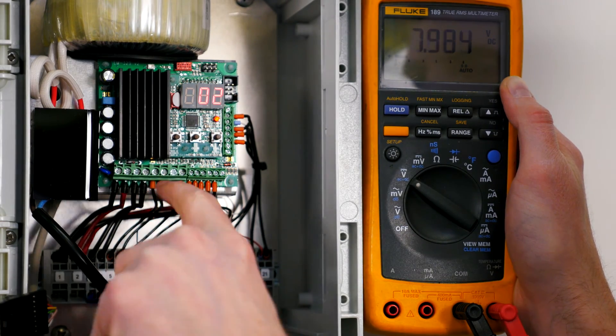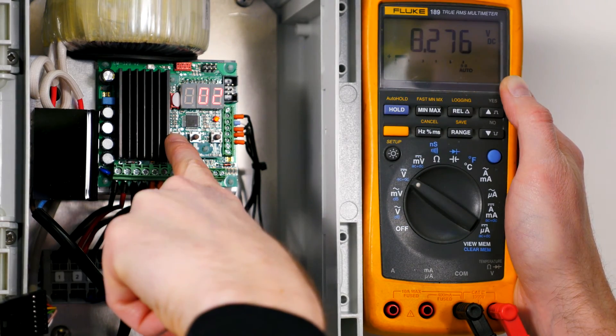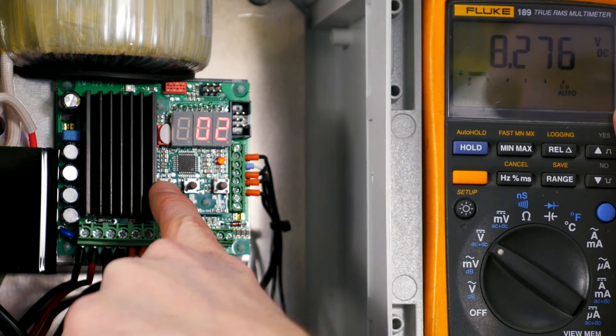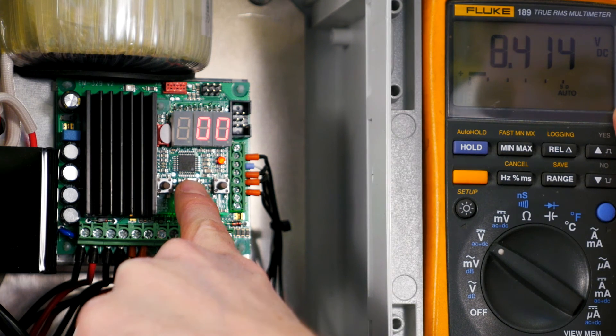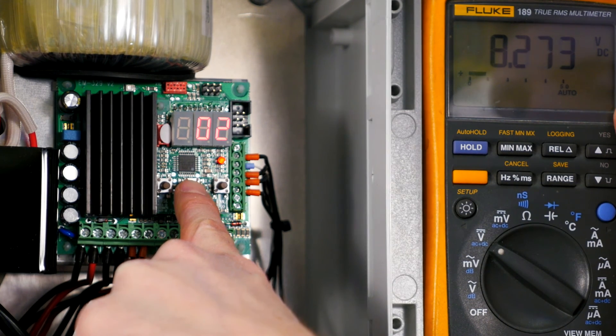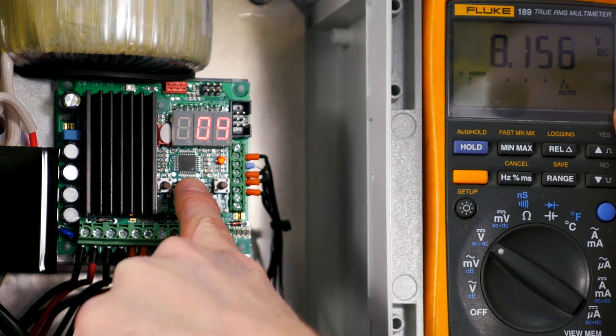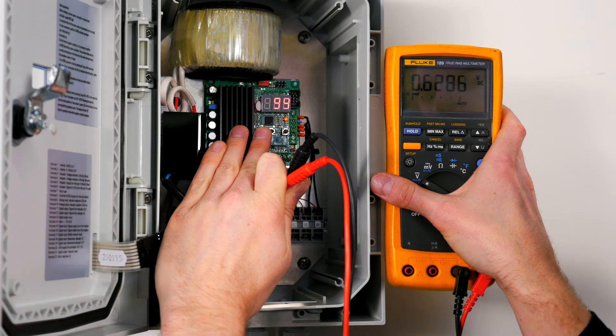Check if there are errors in the feedback by measuring whether there is a voltage between terminals 6 and 8, which vary during the reset procedure. When the actuator is retracted, the voltage must be 0 volts. Once this is your reference point, when the actuator runs outwards, the voltage must increase.